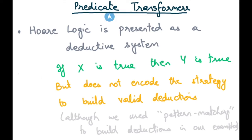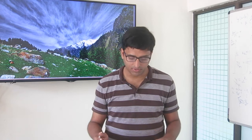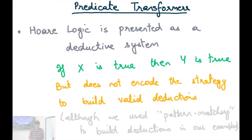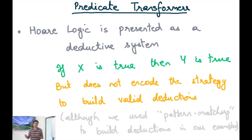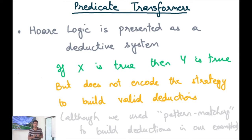We're going to discuss something called predicate transformers or predicate transformer semantics. First, I want to motivate why we need these. We already looked at Hoare logic, which is a deductive system that looks like: if x is true then y is true — a set of inference rules saying if you can construct x then you can construct y. But what it does not encode is the strategy to construct these rules. Given a program and a partial correctness condition as a Hoare triple, there's no strategy to derive that. Although we've been using pattern matching to build reductions in our examples, we need a more algorithmic representation — and that's what predicate transformers give us.